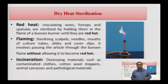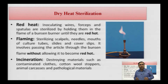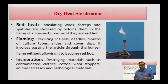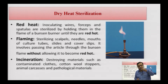The next method for dry heat is flaming, where you pass the material across the tip of the Bunsen flame to make it free from microorganisms. Examples include sterilization of scalpels, needles, the mouth of culture tubes, slides, and cover slips — all commonly found in diagnostic and pathological labs. The fundamental difference is: in red heat you continuously heat in the Bunsen flame until it becomes red hot, whereas in flaming you just pass it across the flame for a very short period of contact.